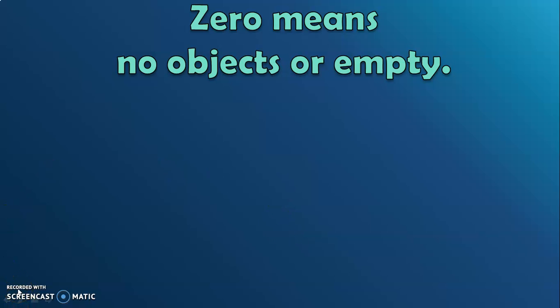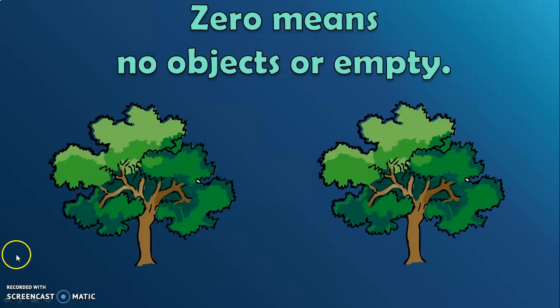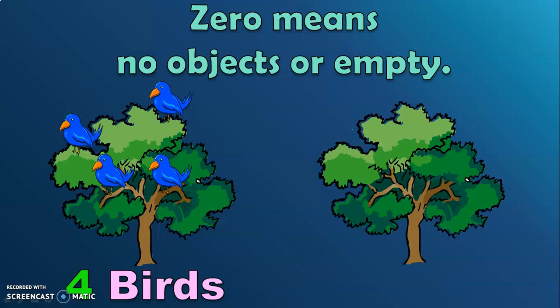Let us see this with the help of another example. Here we have two trees. Some birds flew and came and sat on the trees. Let us count the birds. One, two, three, four. There are four birds in the first tree.